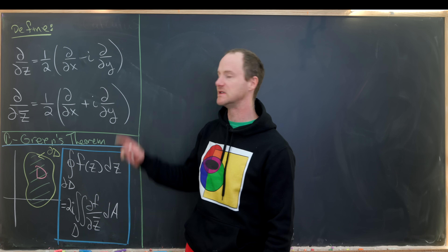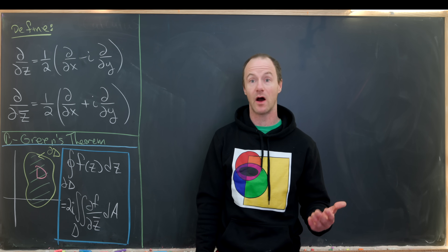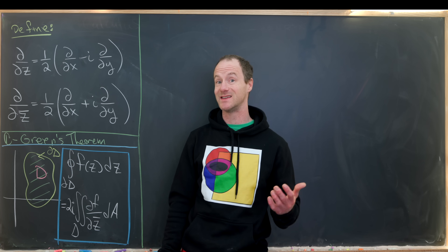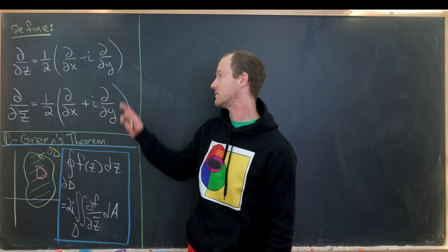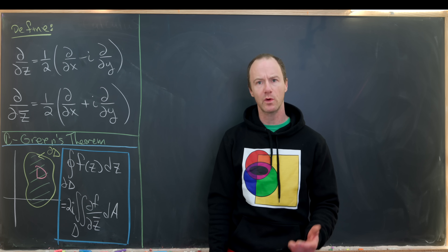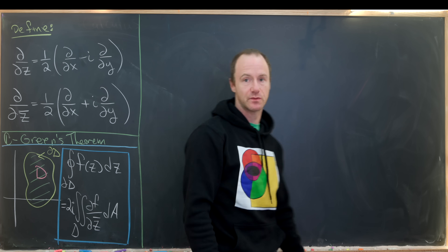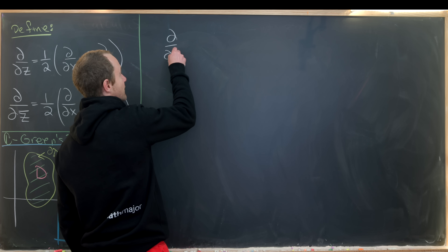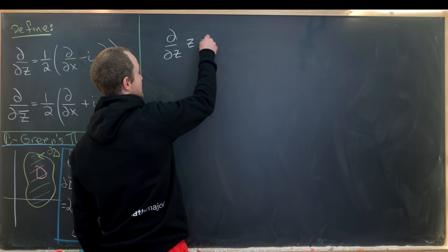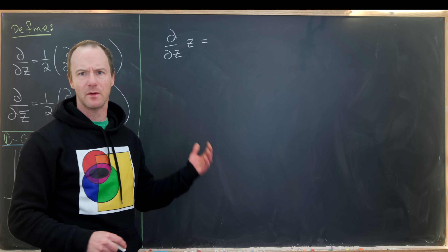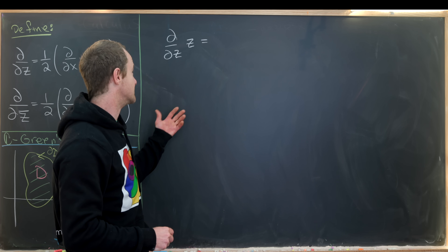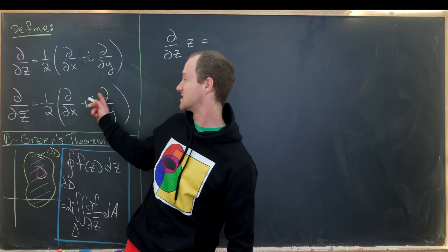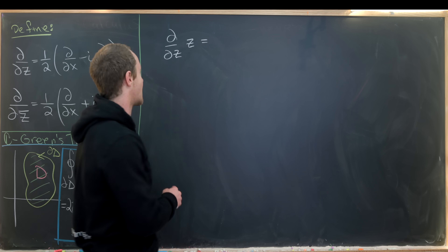Looking at these, if you know how you decompose a complex number into real and imaginary parts and then take its conjugate, it may seem like these are switched — but we're about to show you why they are not. Let's do that by taking the partial derivative of z with respect to z, and then the partial derivative of z with respect to z̄, to show that this is the right definition for these operators.